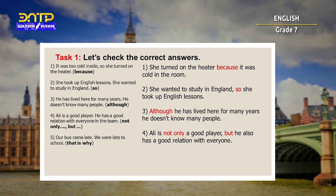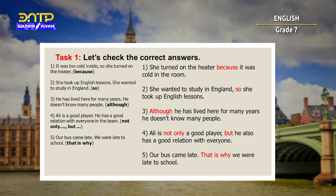Number four: Ali is not only a good player, but he also has a good relationship with everyone. And number five: our boss came late, that is why we were late to school. I hope you got all your answers right. Well done, everyone!